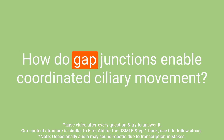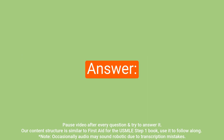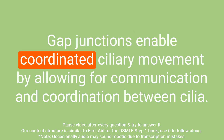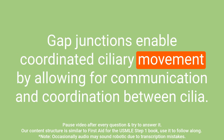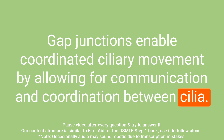Question: How do gap junctions enable coordinated ciliary movement? Answer: Gap junctions enable coordinated ciliary movement by allowing for communication and coordination between cilia.